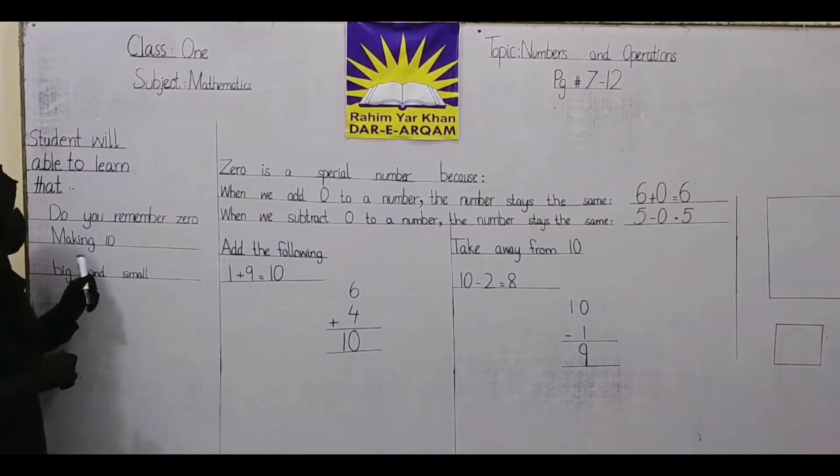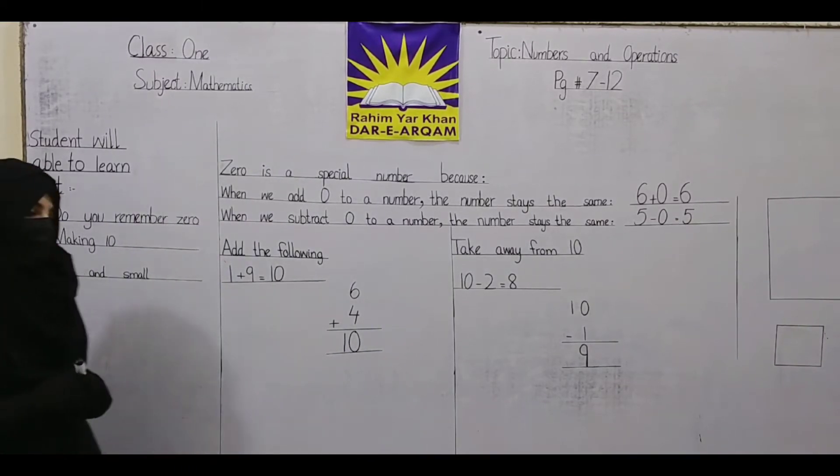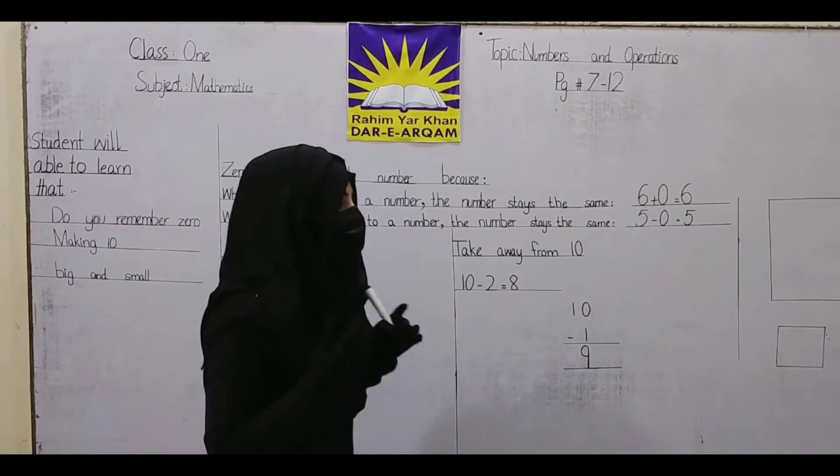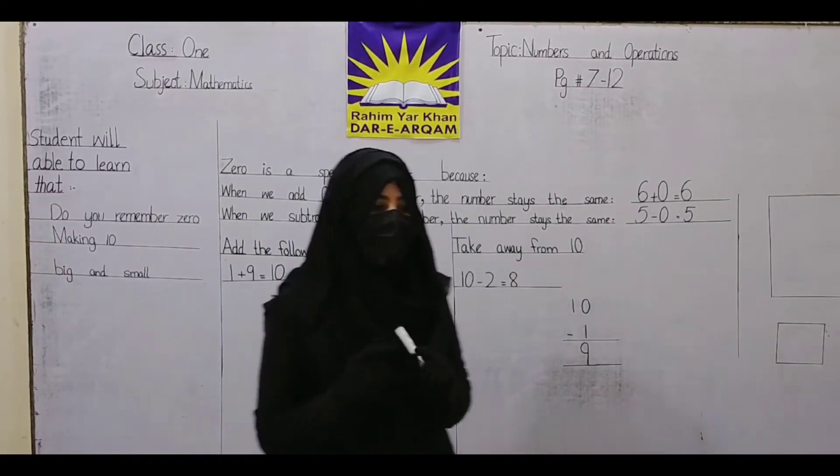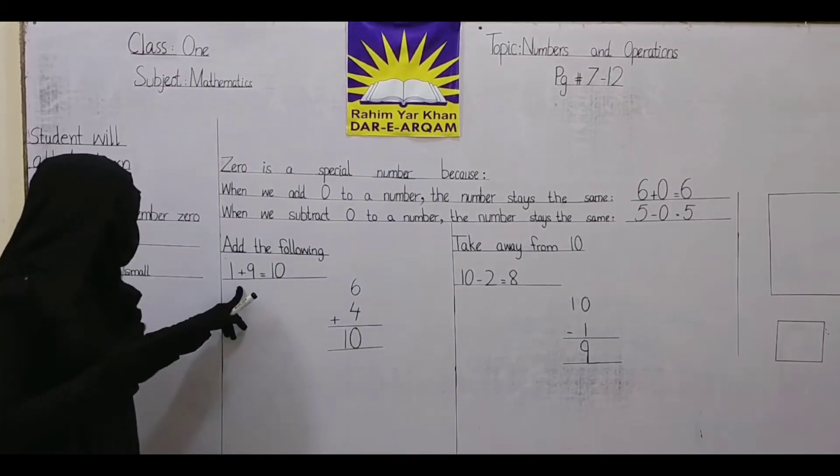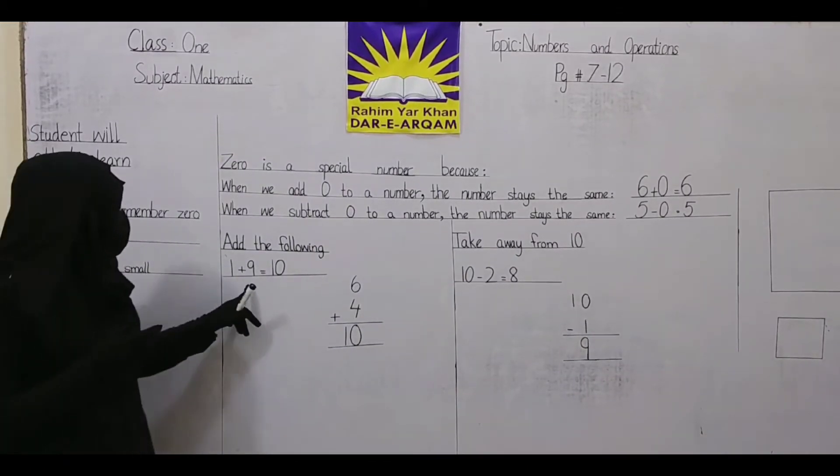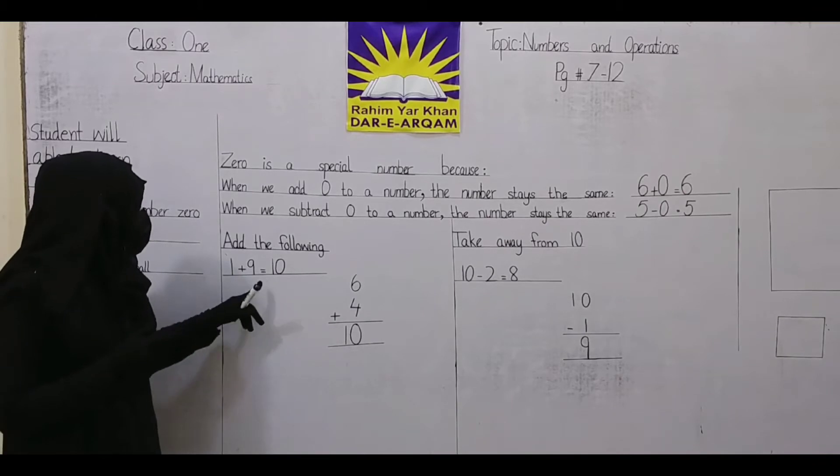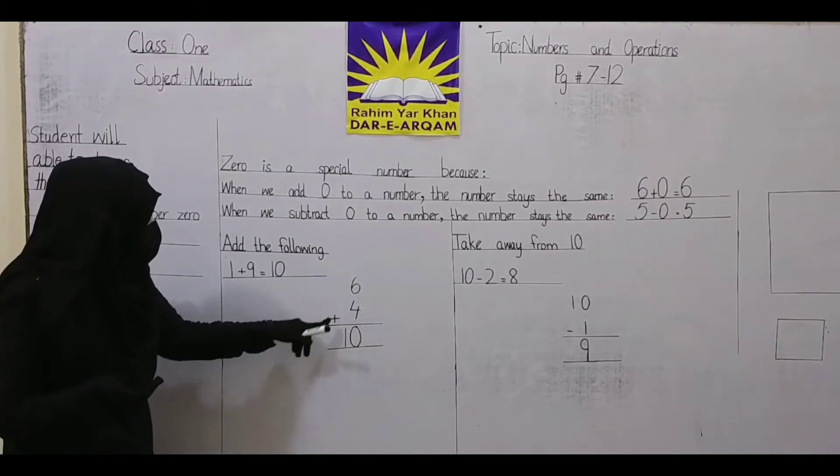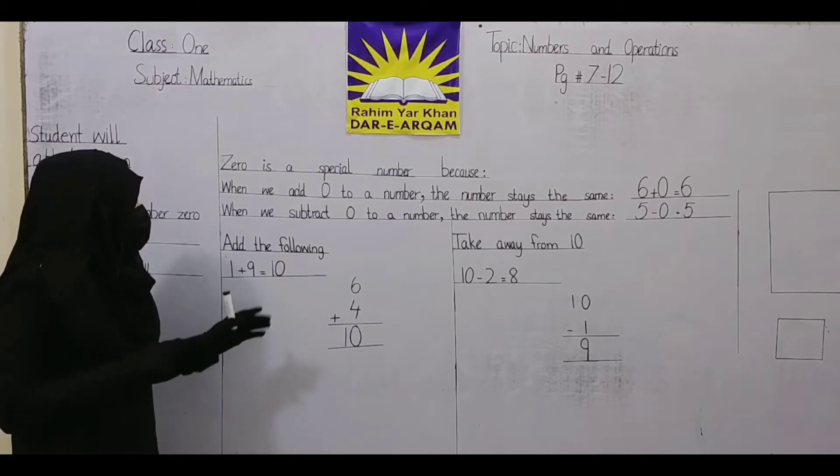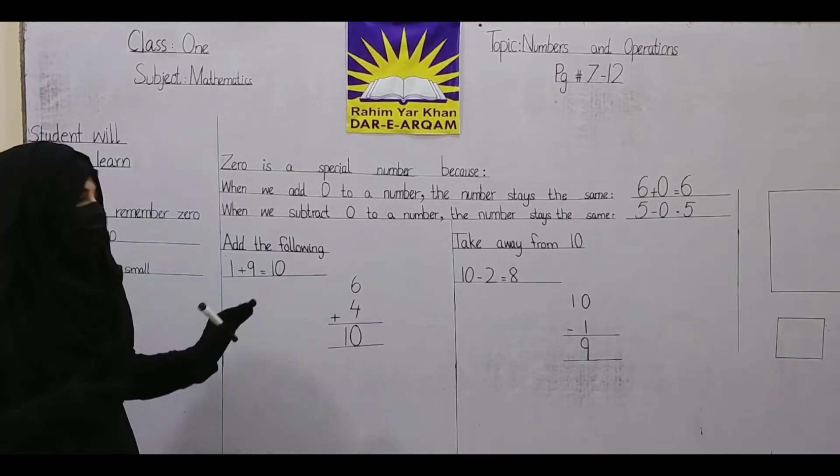Now we have making 10. That means we make the number 10 using 2 digits. Here we have examples. 1 plus 9 equals 10, horizontal way. Vertical way: 6 plus 4 equals 10.